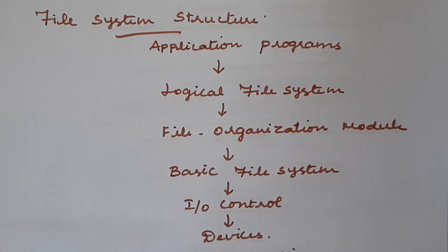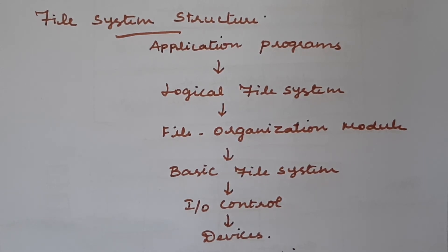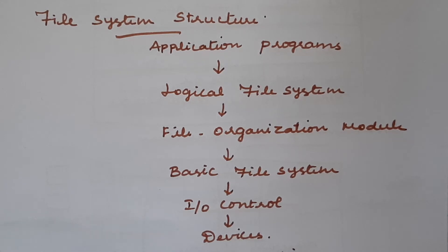The second design problem is how to map the logical file system onto the physical file system using algorithms and data structures. The file system is composed of many different levels in a layered design, where each level uses the features of the lower level to create new features for higher levels.